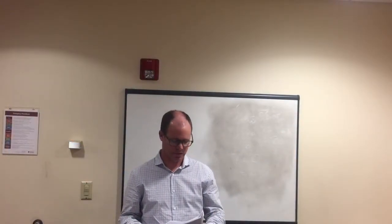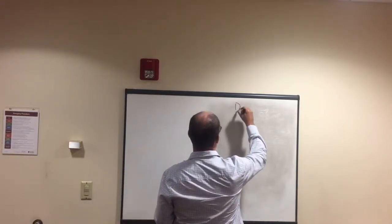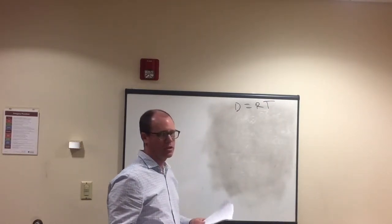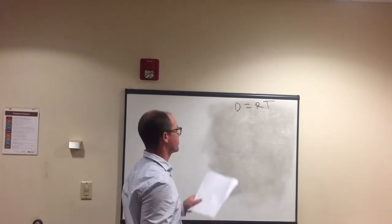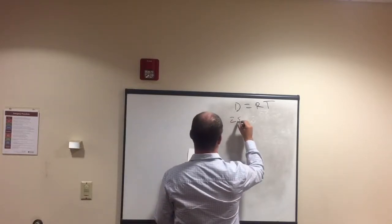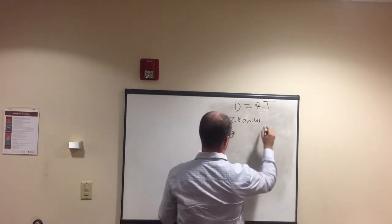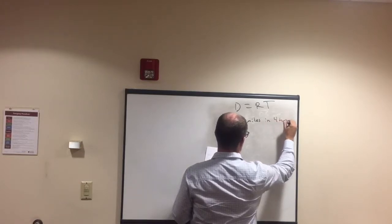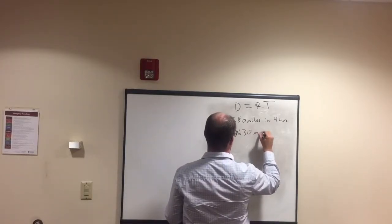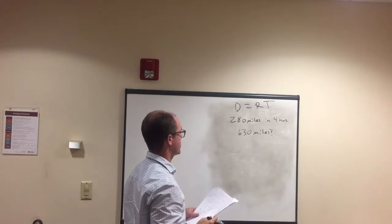We're going to look at ratios, proportions, and rates. First, we'll look at distance equals rate times time. They'll always give you two of the three values — in this case, the question says 280 miles in four hours. Then it asks how long to drive 630 miles.